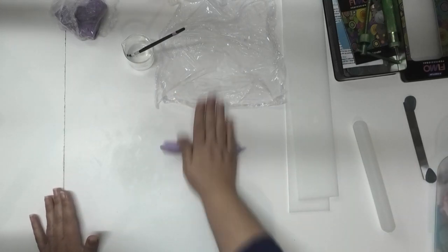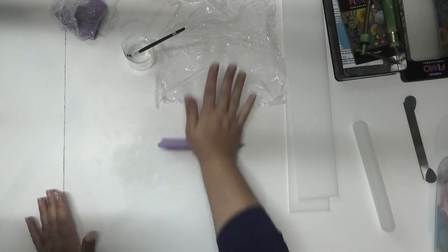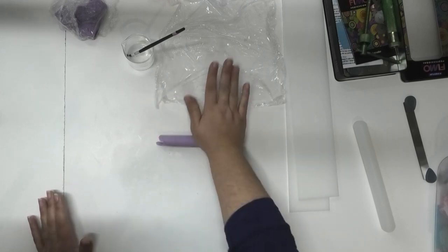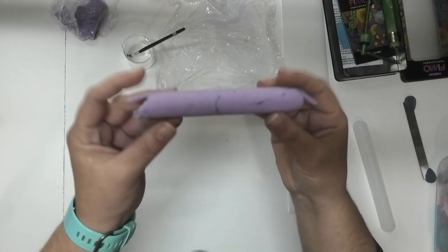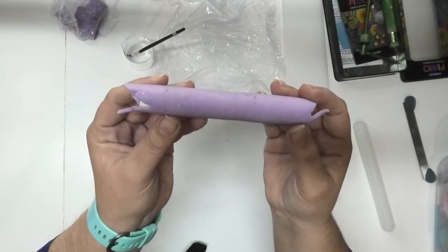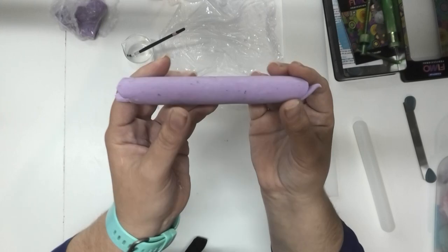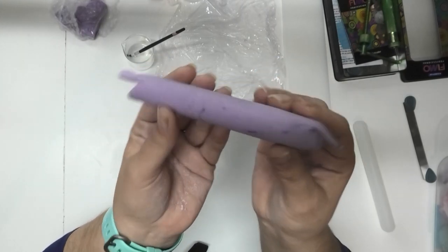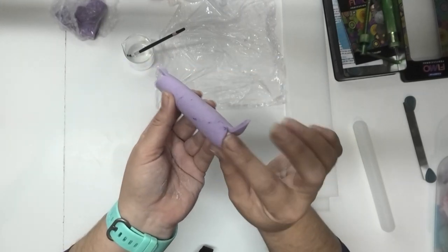Give that a roll to get it nice and smooth and to make sure that it is well stuck together. Okay, so there is the first layer of our rainbow all done up here. It has got really really windy outside so hopefully it's not going to make too much noise on the camera. So we've got that first color.